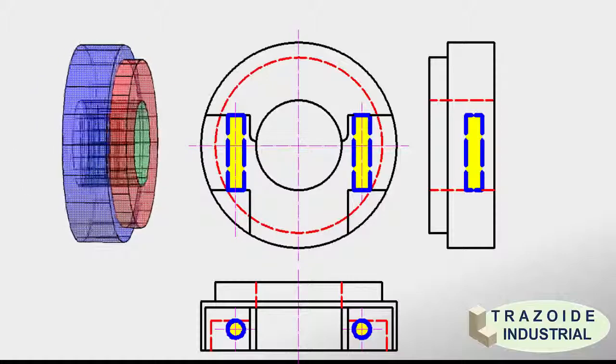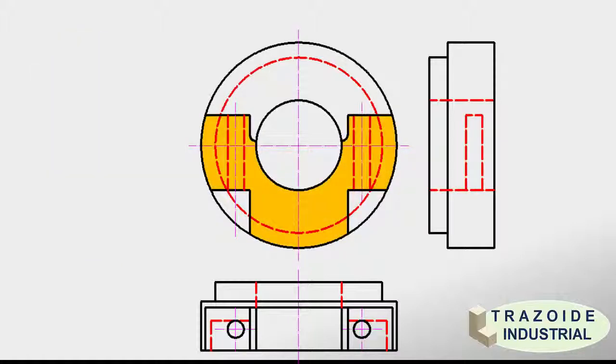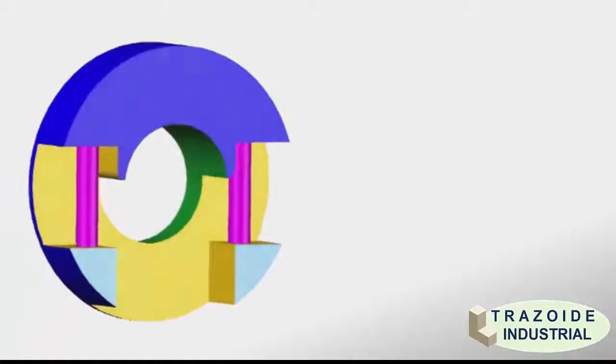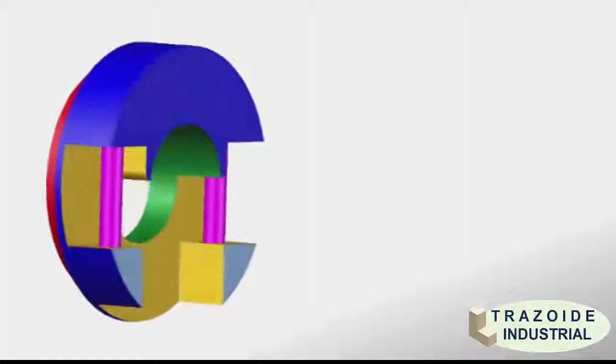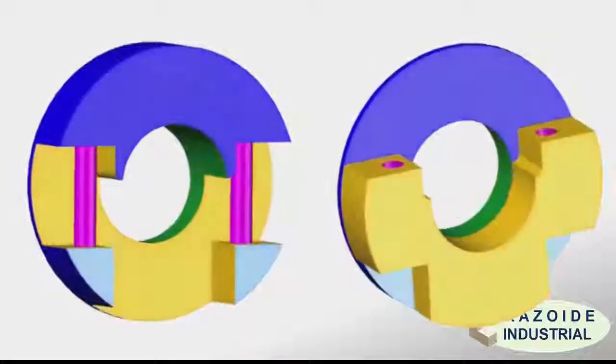Once we have seen the most common parts, we continue with those that are a bit more complex. In the elevation we see three distinct parts: the central area marked in orange and the upper and lower parts marked in different shades of blue. Each area indicates that it has a different height or altitude. Without looking at the plant we could make two assumptions. The first is that the central area was more sunken while blue areas were outgoing, or conversely, that the central area was outgoing while blue areas are sunken.